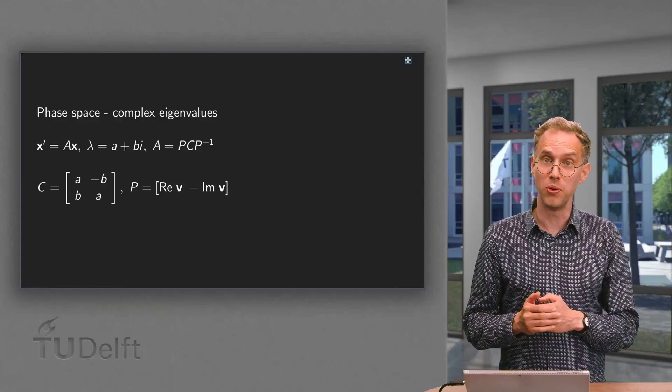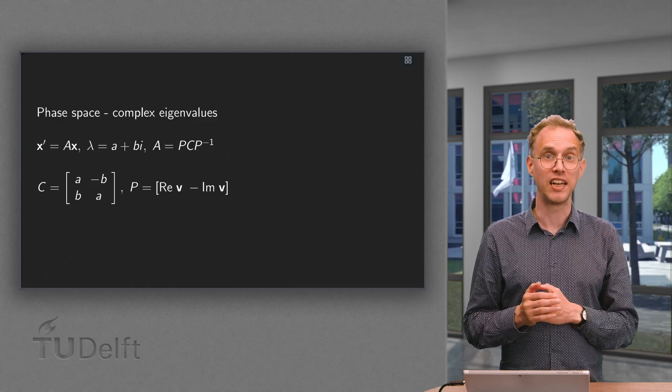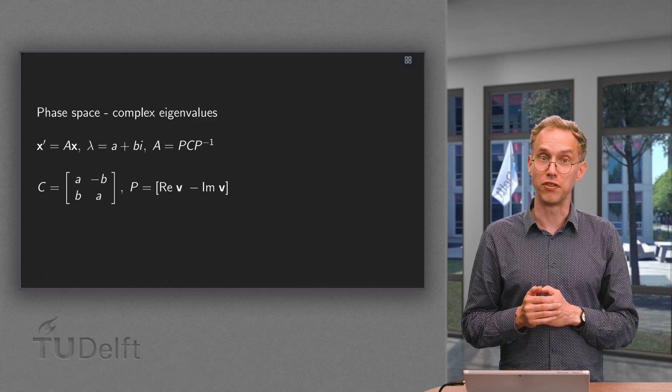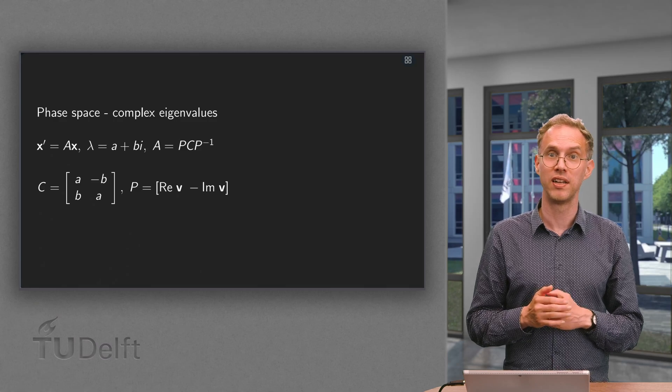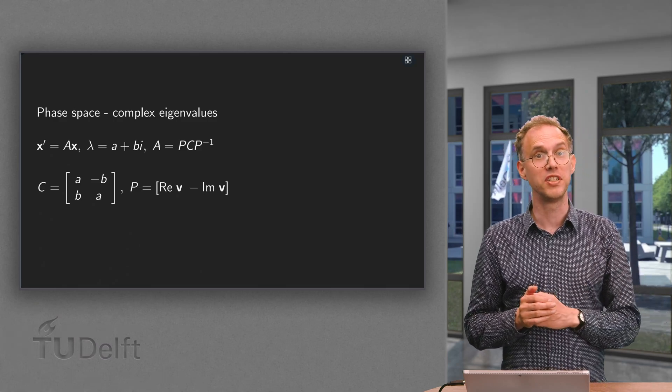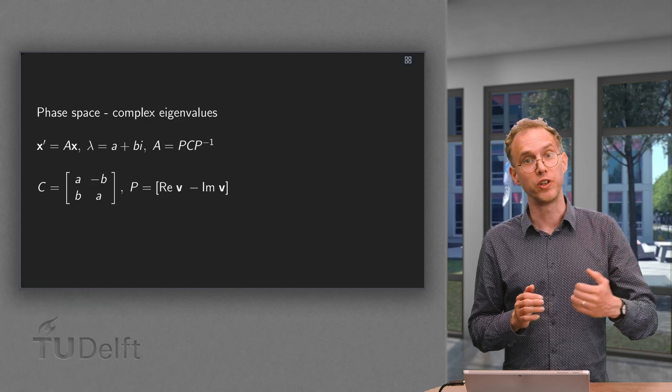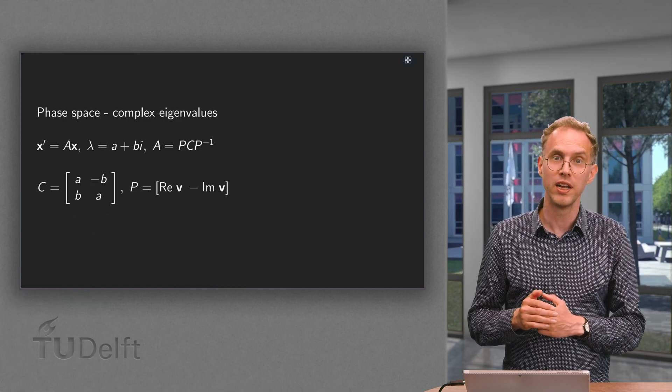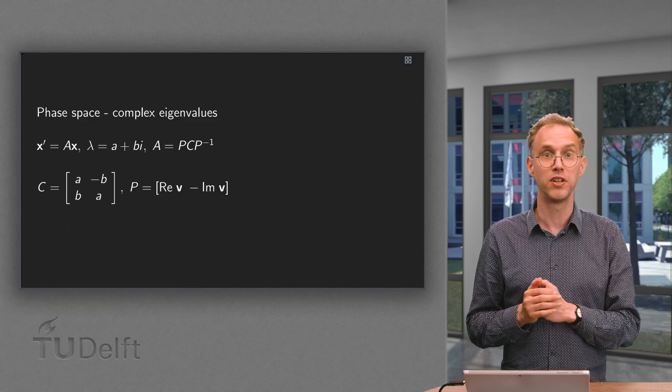How does the face space look if A has complex eigenvalues? In that case we first use a change of variables in order to get y prime equals c times y. Because in this new basis it is much easier to sketch the face space. And once we have found the face space for y, we can revert to the original variables to find the face space for x.